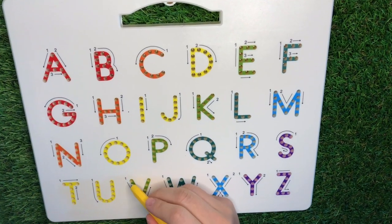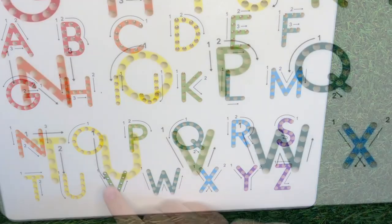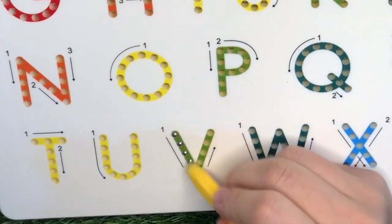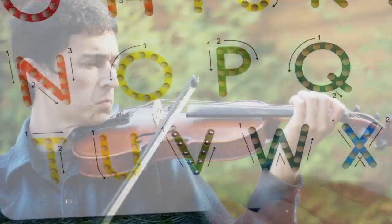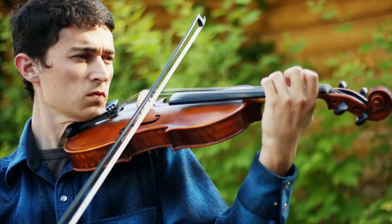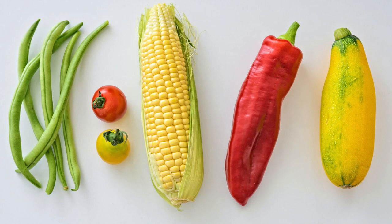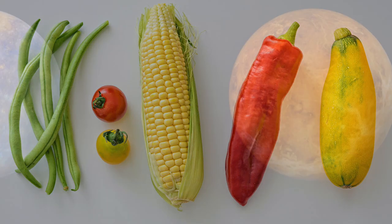Letter V. Slant down and slant up. V is for violin, vegetables, and venus.